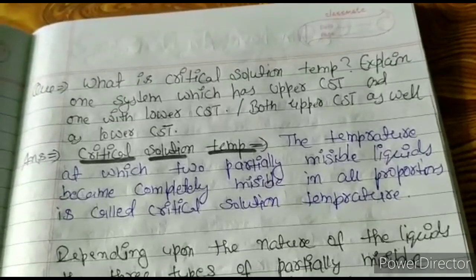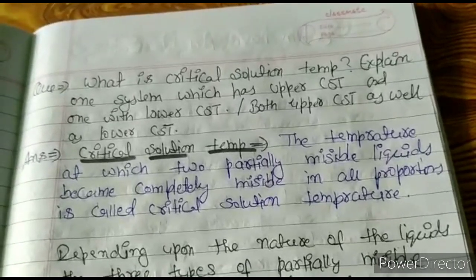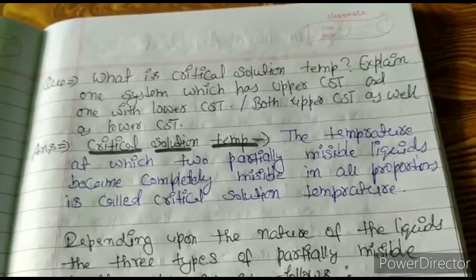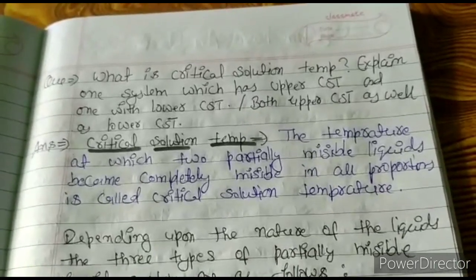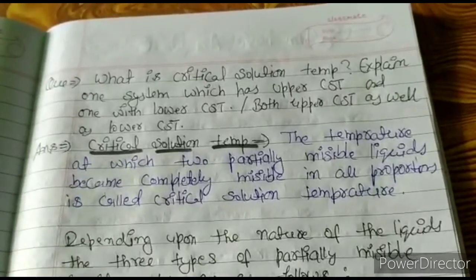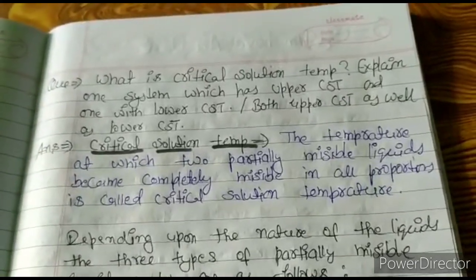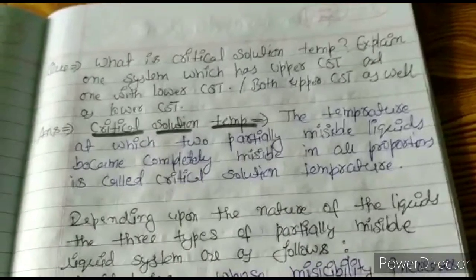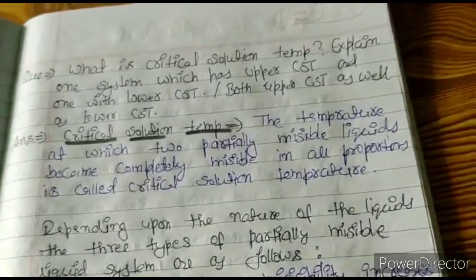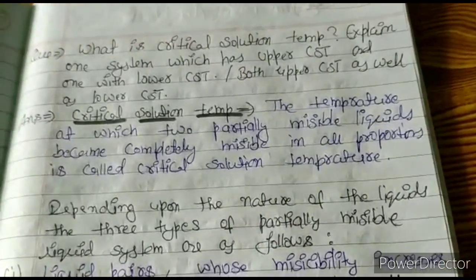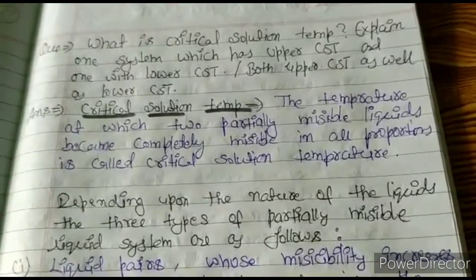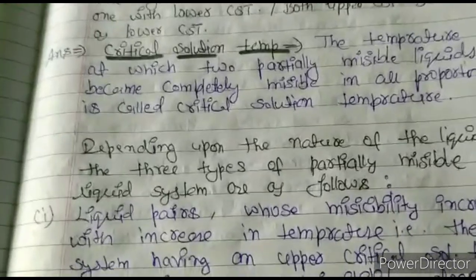Today I will explain the answers to these questions: what is critical solution temperature, explain one system which has upper critical solution temperature and one with lower critical solution temperature. The temperature at which two partially miscible liquids become completely miscible in all proportions is called critical solution temperature.